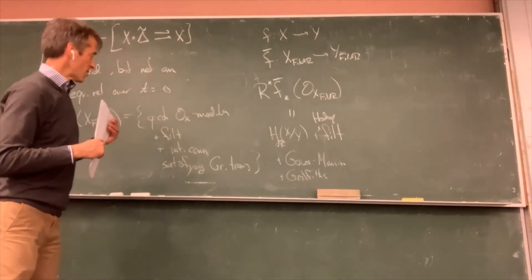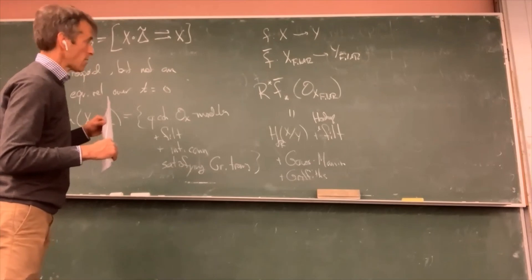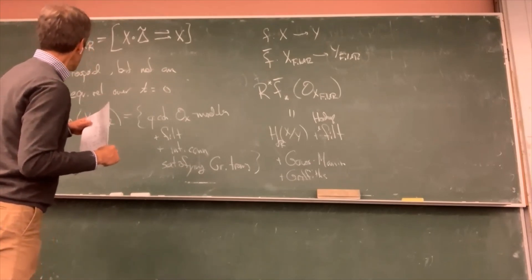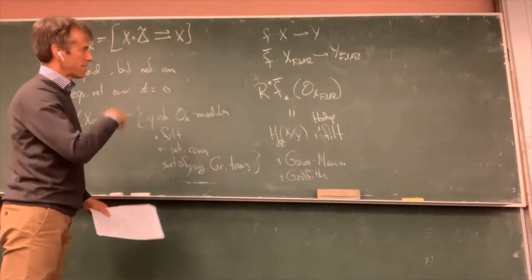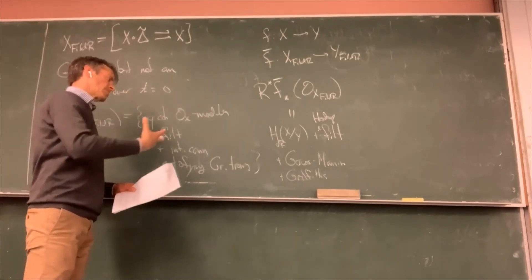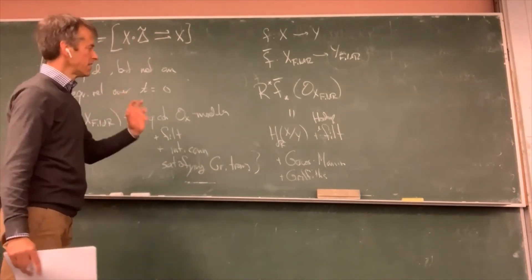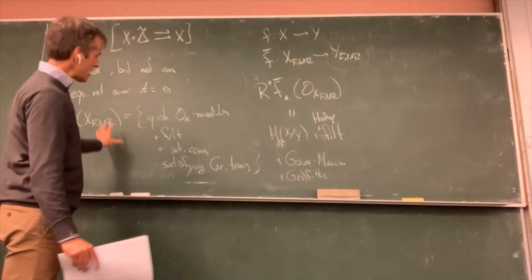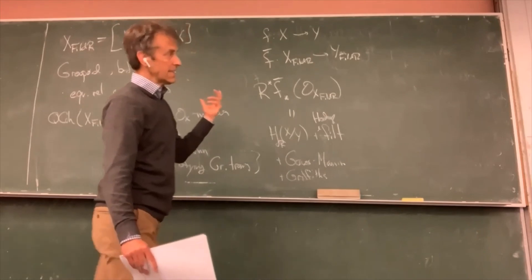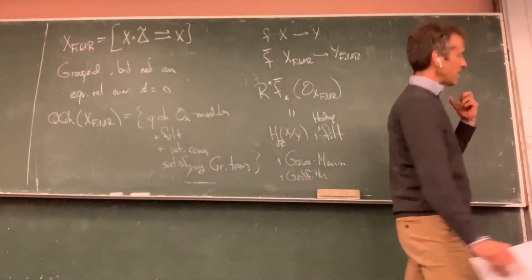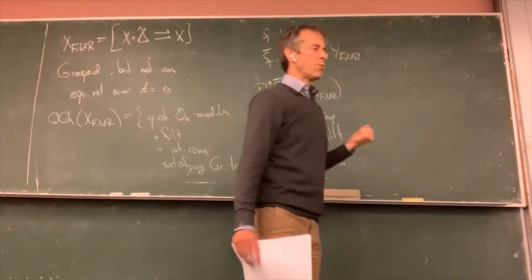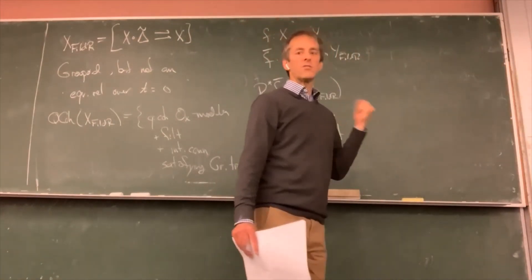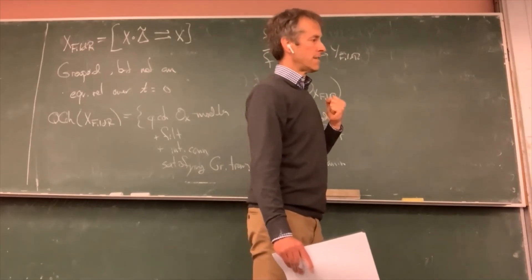If you have a morphism which is smooth and proper then you get another morphism f̄ on X_HdR mapping to Y_HdR, and you can take the relative cohomology of the structure sheaf. This will be the relative de Rham cohomology plus its Hodge filtration plus the Gauss-Manin connection, and the two satisfy Griffiths transversality — Hodge, Gauss-Manin and Griffiths are all automatic just from the setup.